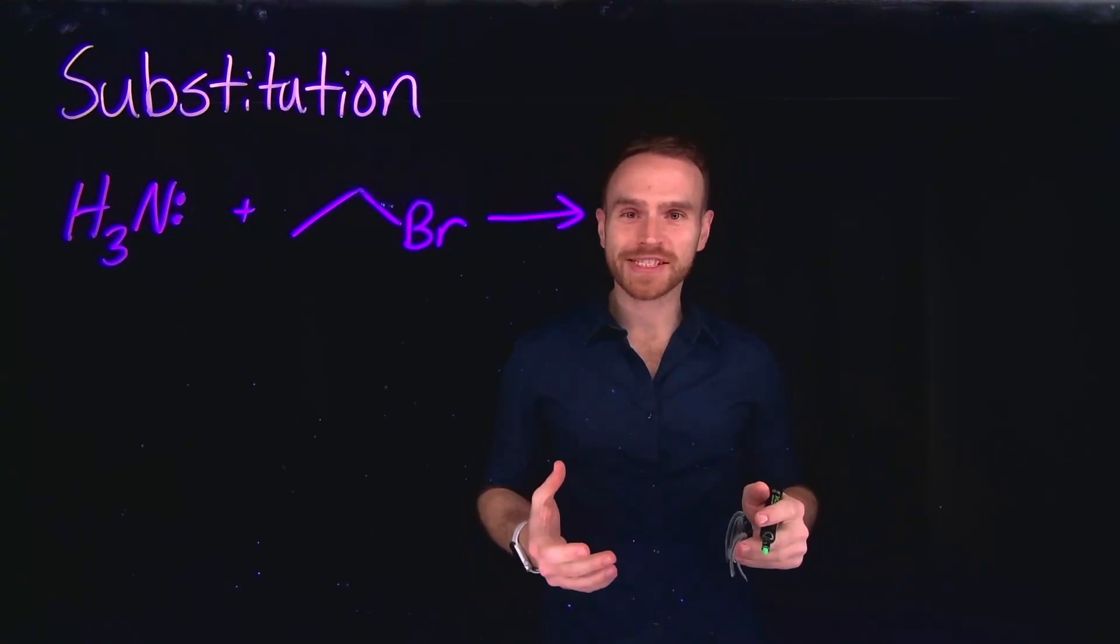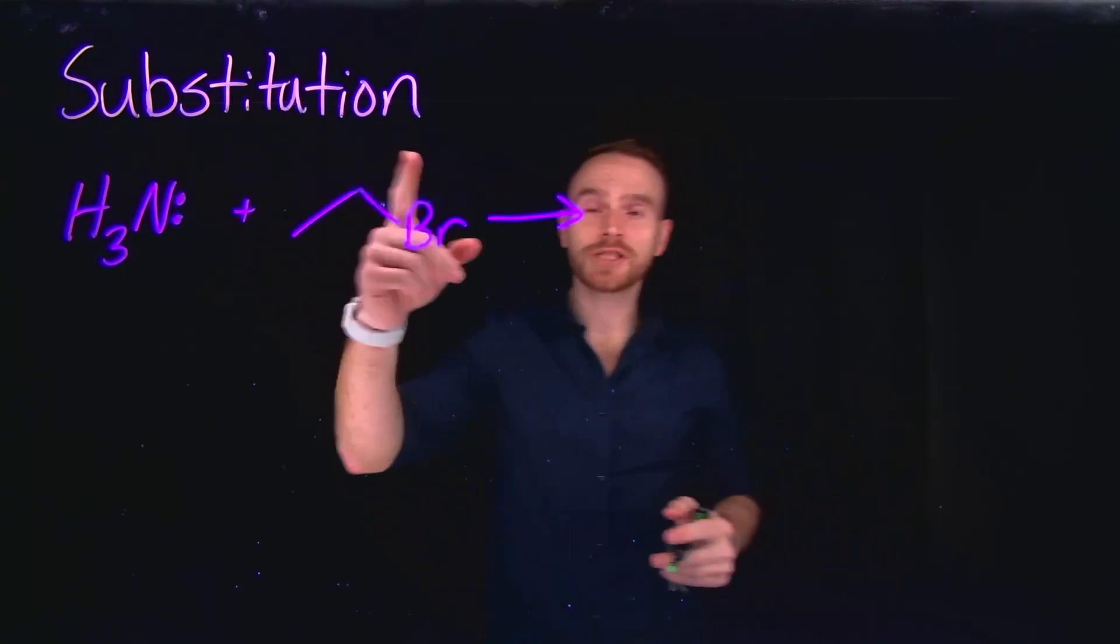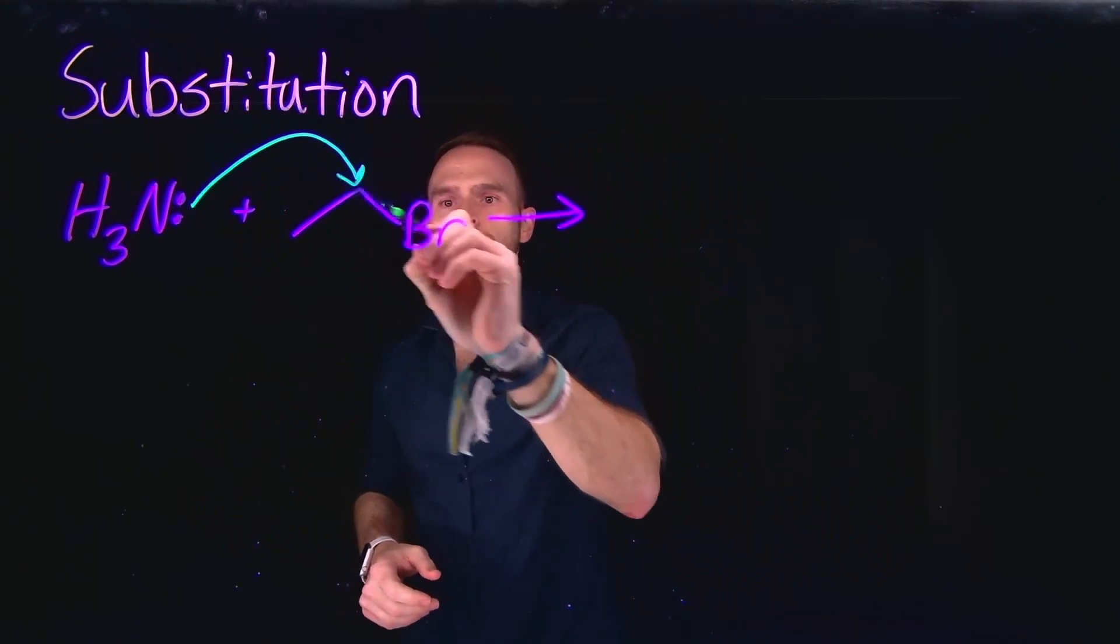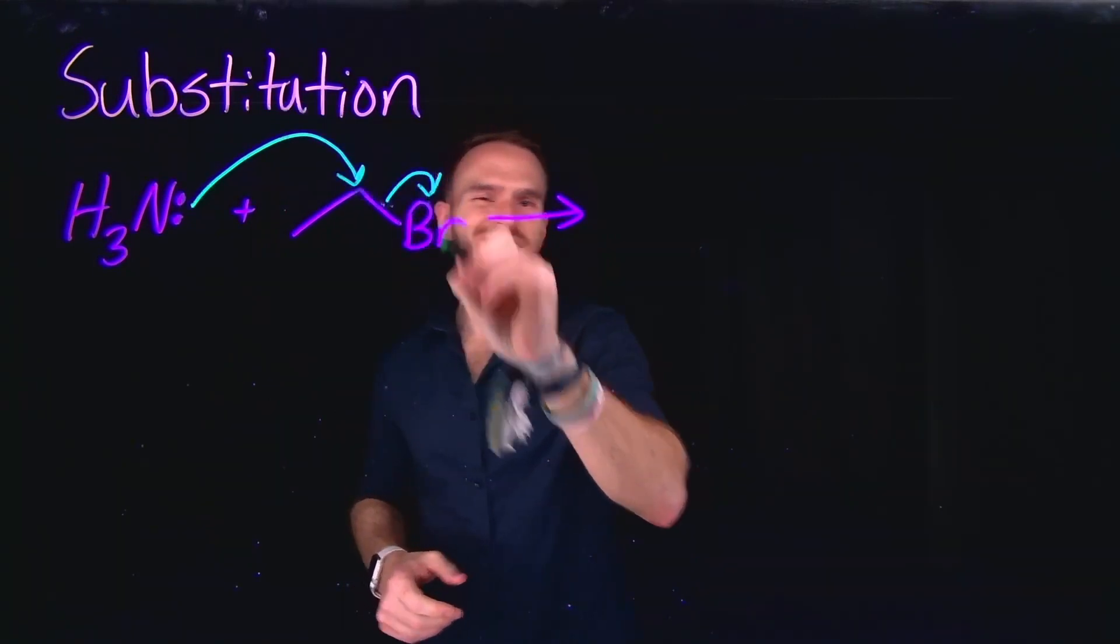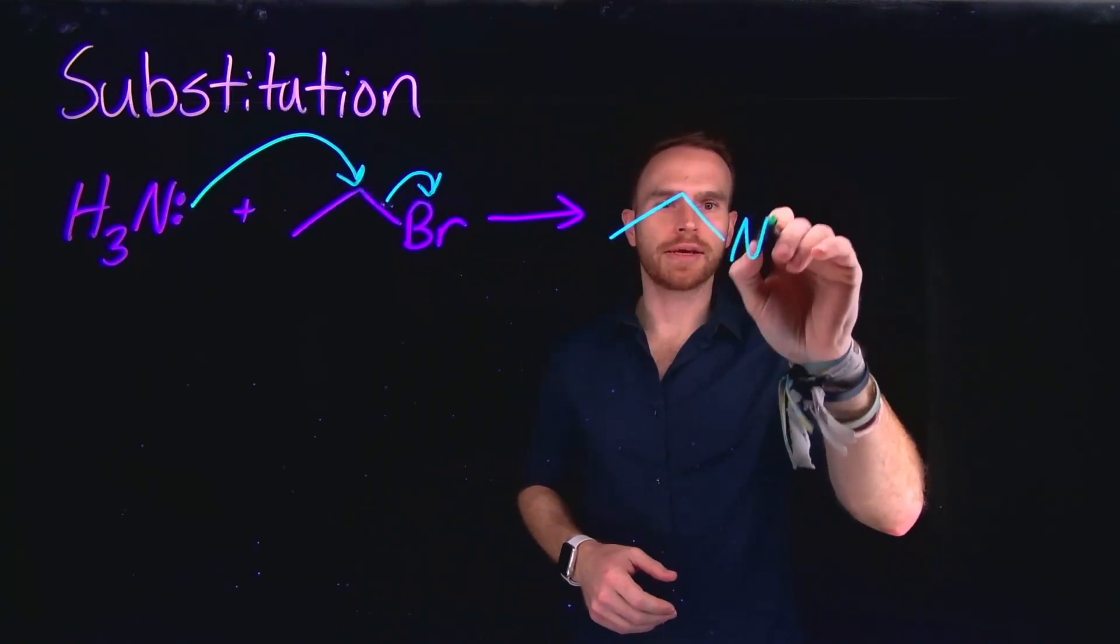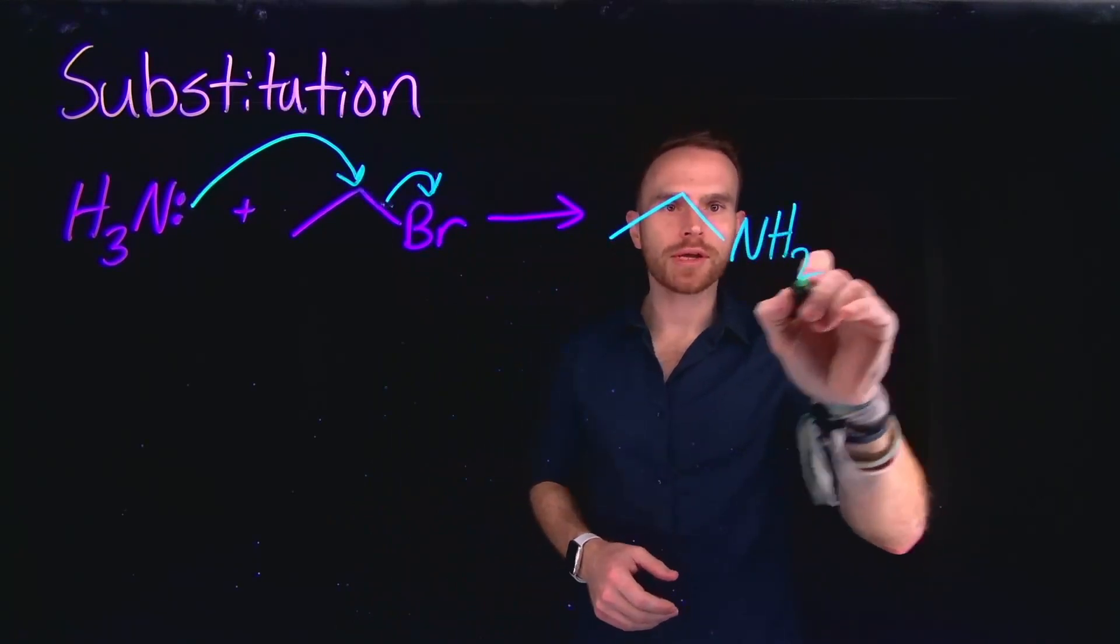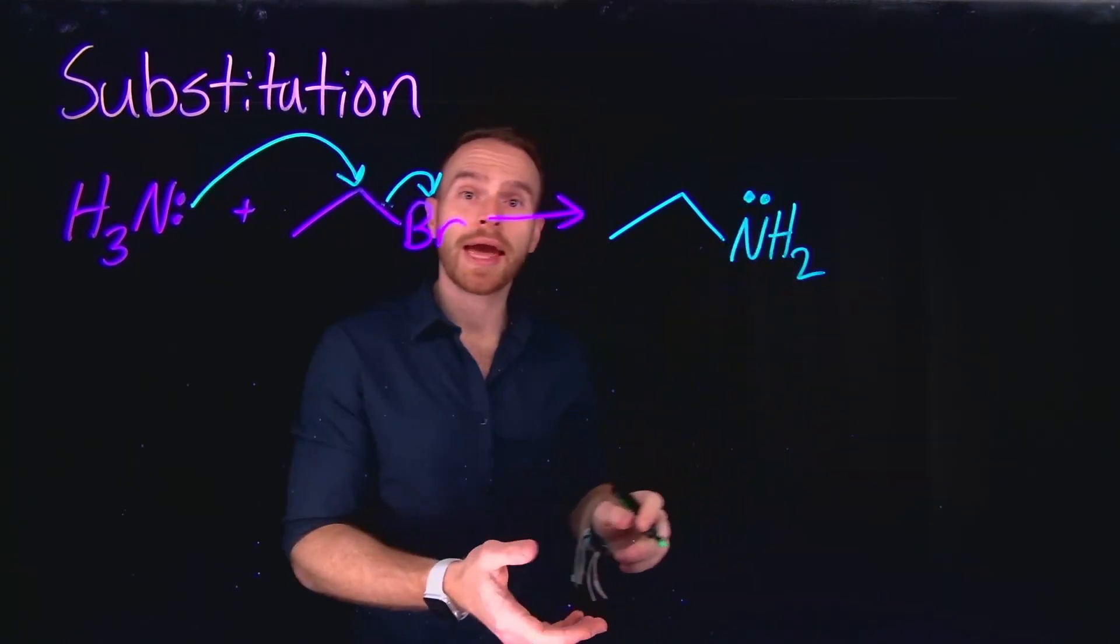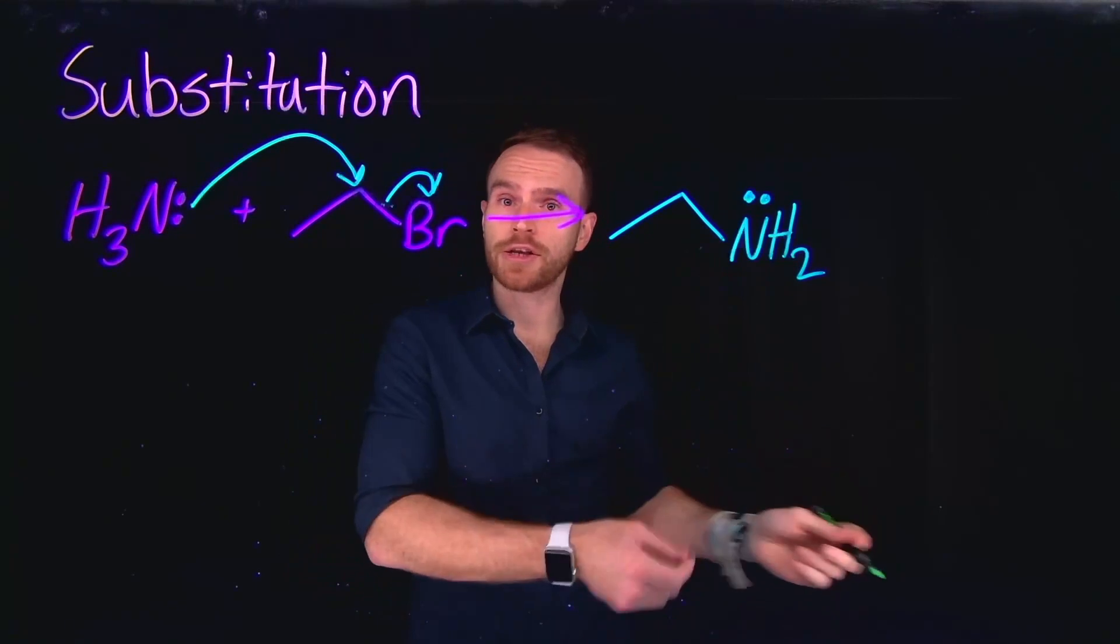One method for synthesizing alkylated amines is substitution reactions, where ammonia or other amines can undergo substitution reactions like SN1 and SN2 to create newly formed alkylated amines. Now, importantly, what has happened here, once we've generated our alkylated amine, is in fact a flaw in using substitution.